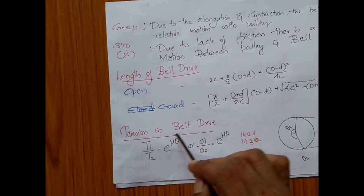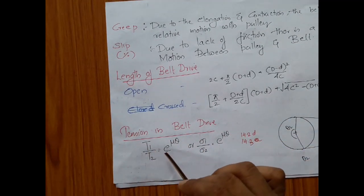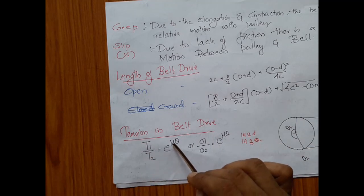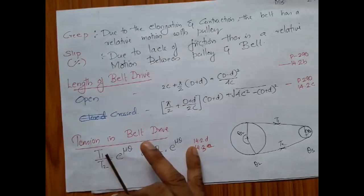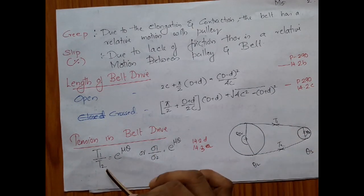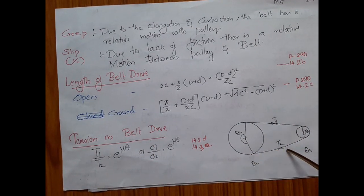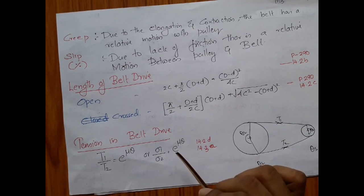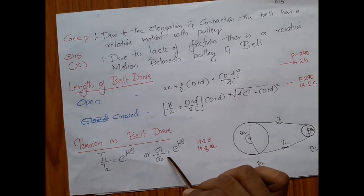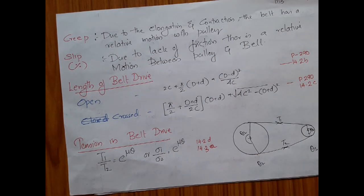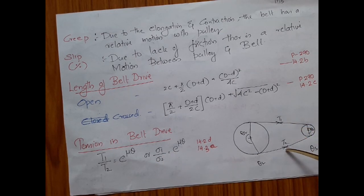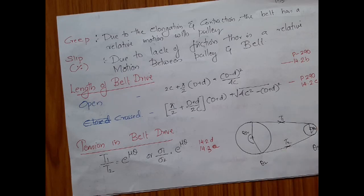Now let us discuss the ratio of belt tensions. This is a familiar equation: T1 divided by T2 equals e to the power of mu theta, where T1 is the tension in the tight side and T2 is the tension in the slack side. You may not be familiar with the alternative form: sigma1 divided by sigma2 equals e to the power of mu theta, where sigma1 and sigma2 are the stresses in the tighter side and the slack side respectively.